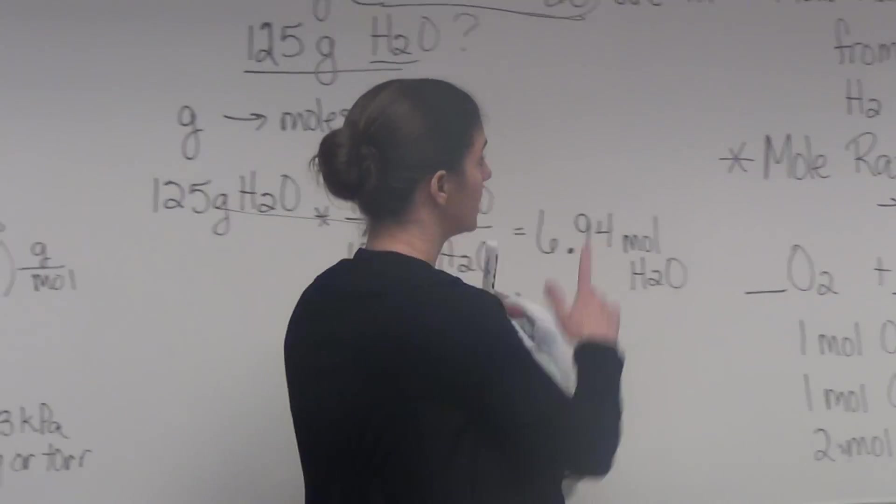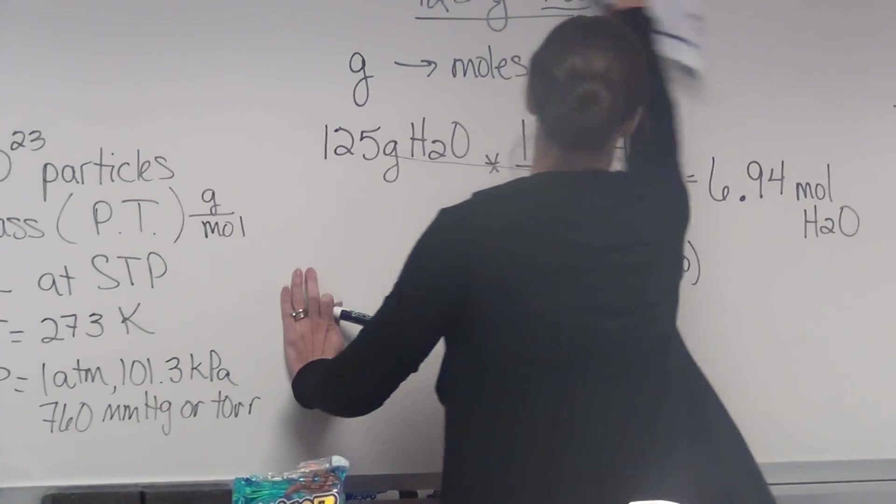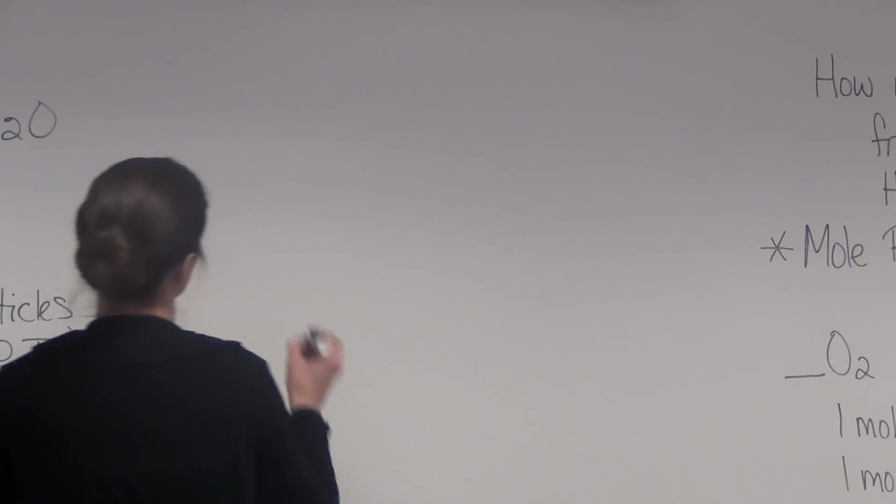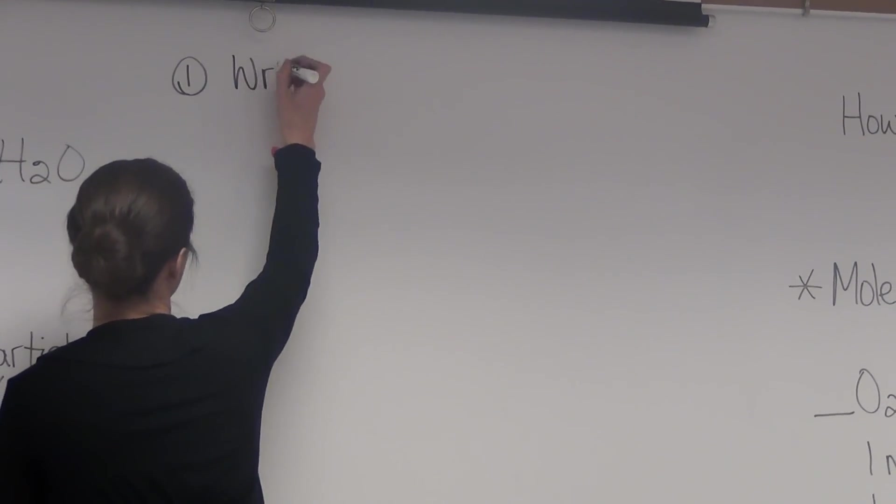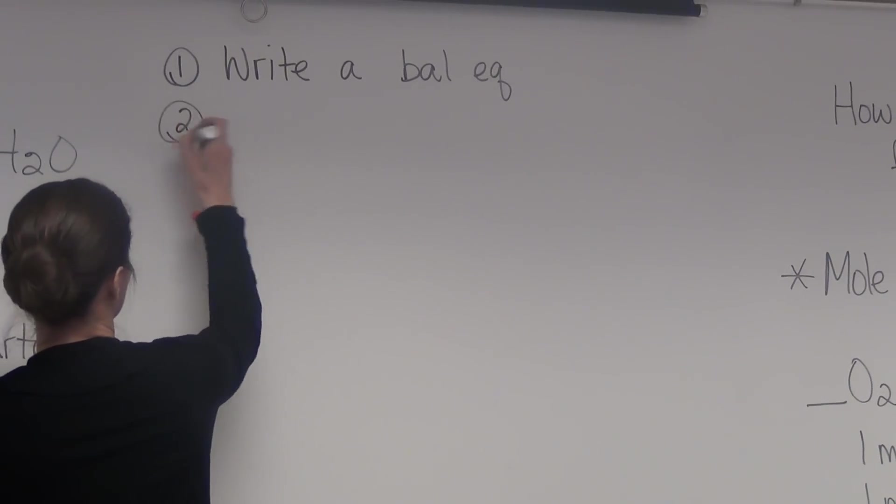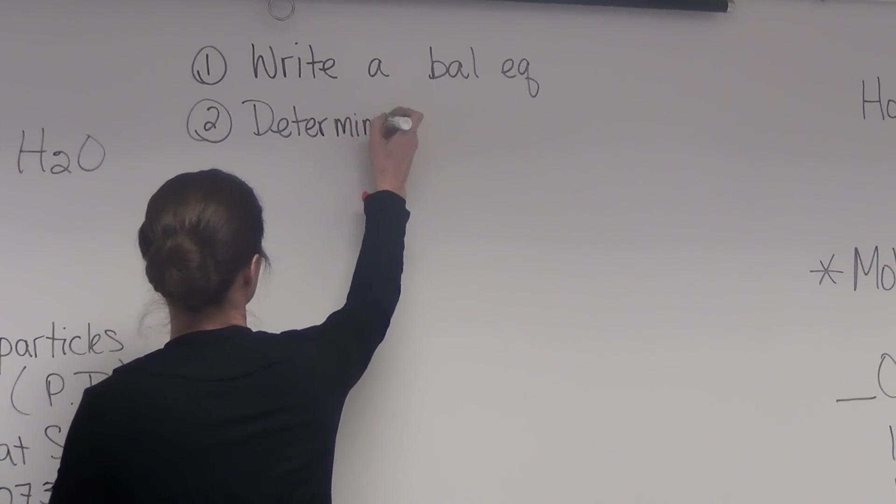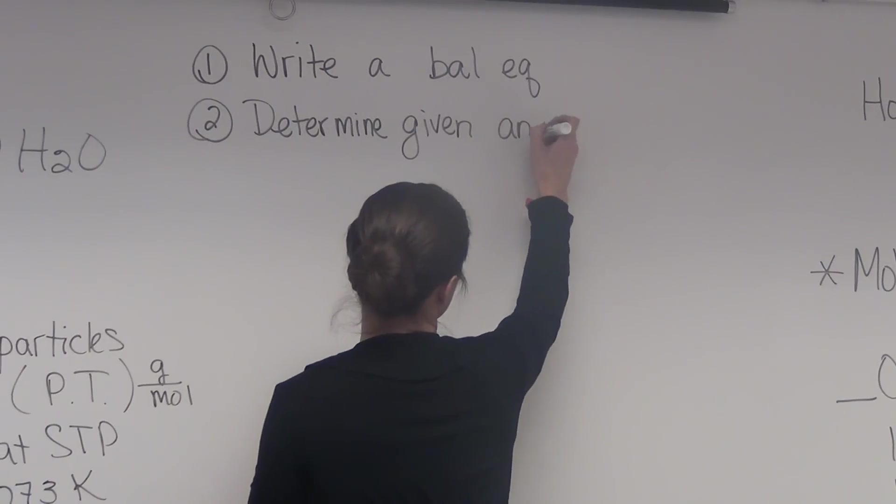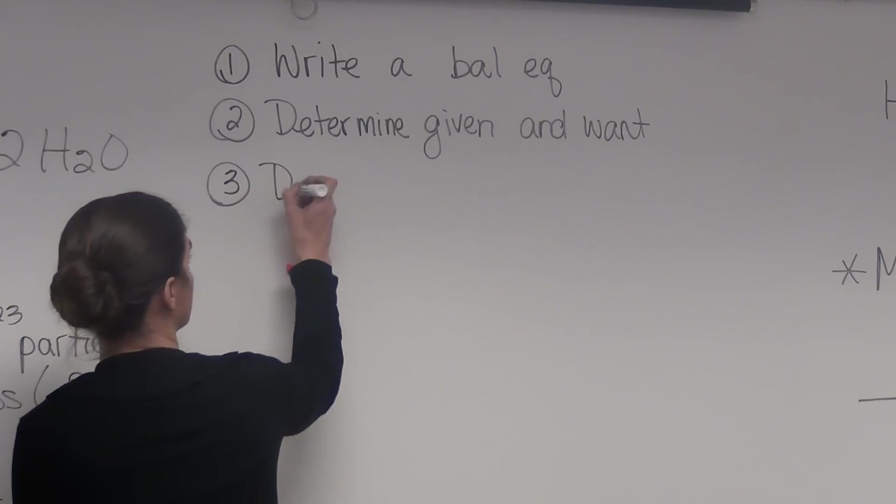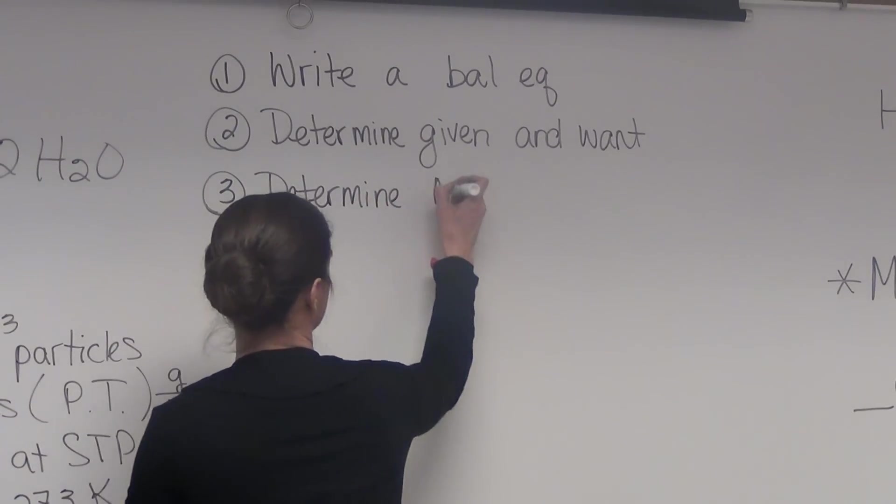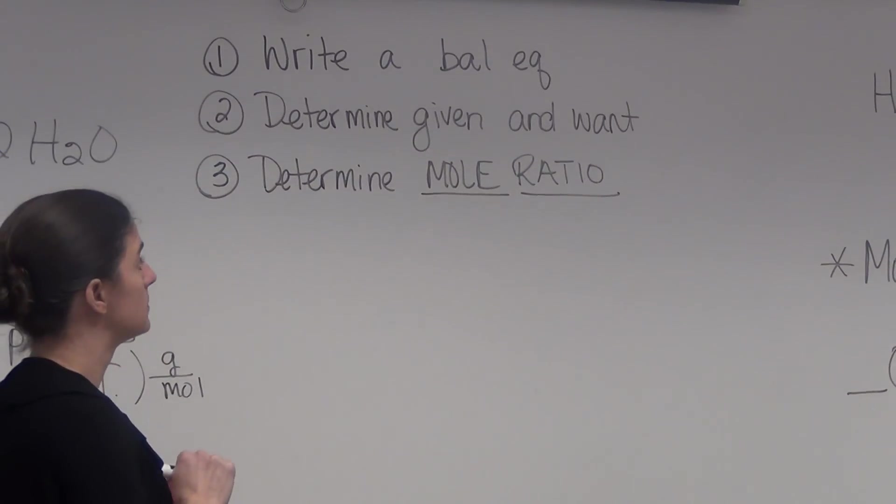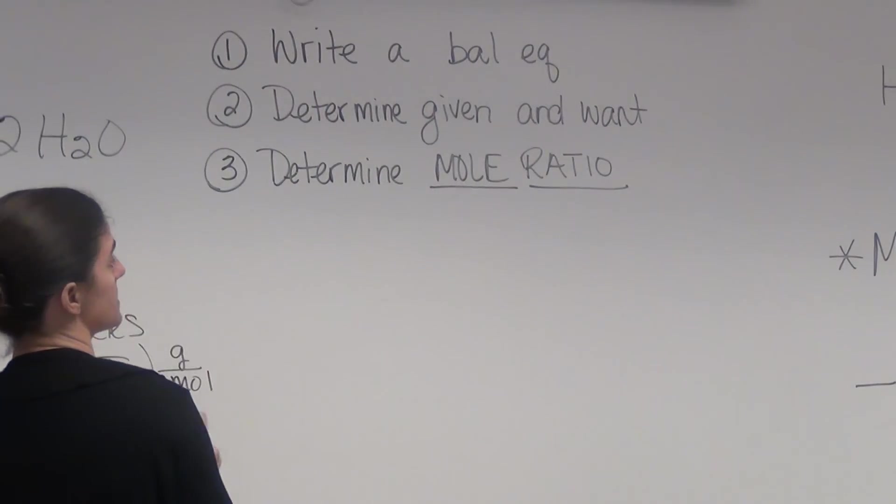So now we can do a problem. We can take what's written there and we can set it up. I'm going to give you the steps to solve a problem. Step 1, you're going to write a balanced equation. Step 2, you're going to determine your given and the want, what you're trying to find. Step 3, you're going to determine your mole ratio. This mole ratio is what makes it a stoichiometry problem, because you're going from one substance to another substance.